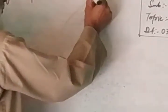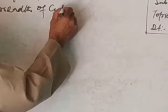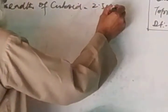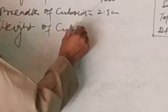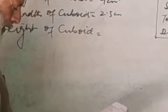What will be the volume of a packet containing 12-sided boxes? The length of the cuboid is 4 cm, the height of the cuboid is 2.5 cm, and the width of the cuboid is 1.5 cm.